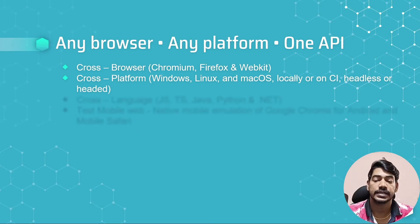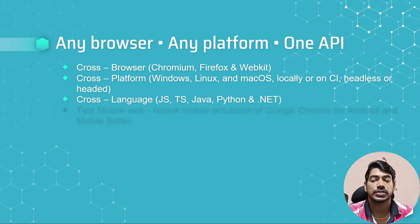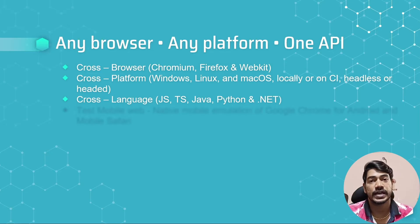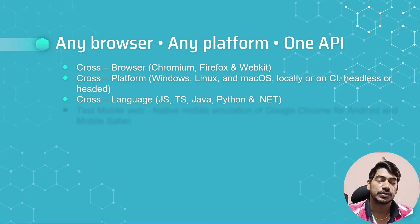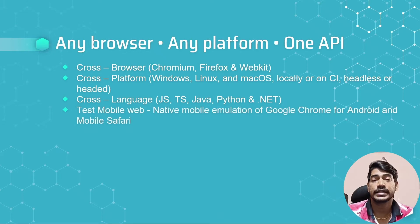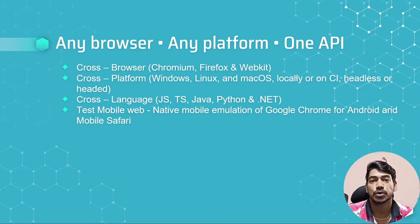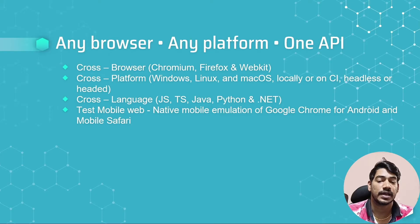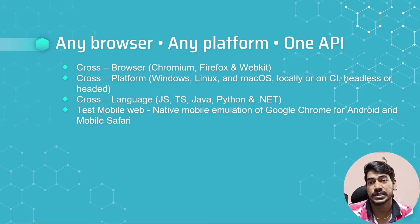A major advantage of Playwright is multiple language bindings: Node.js (JavaScript and TypeScript), Java, Python, and .NET. Whatever your comfort level, you can pick the language and write your tests. You can also test mobile browsers — Chrome on Android and Safari on iOS — but only browser interaction is supported. Native application testing with APK files is not supported yet, though that may come in the future.